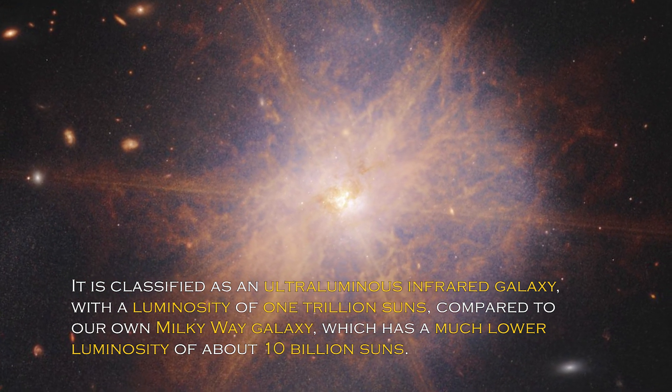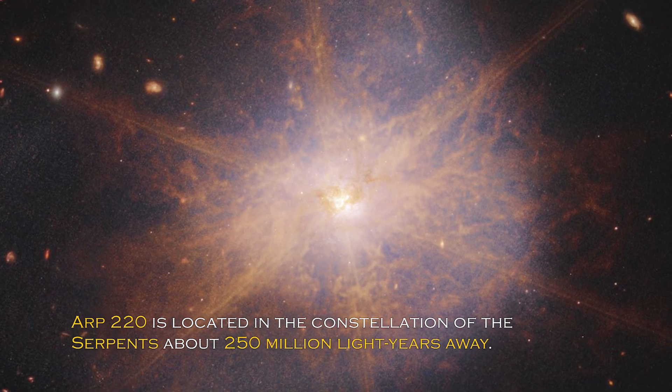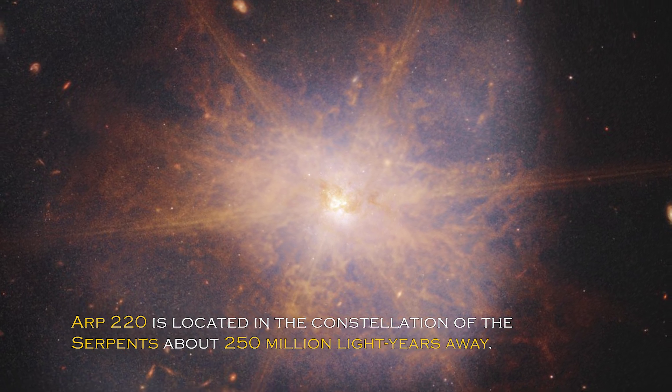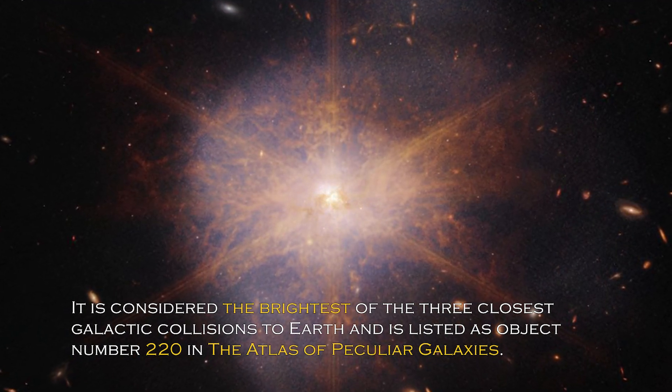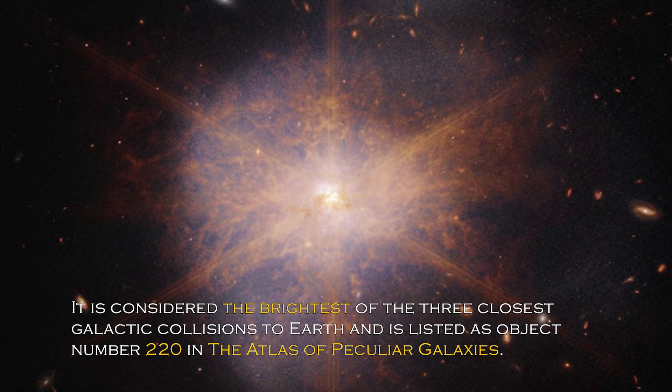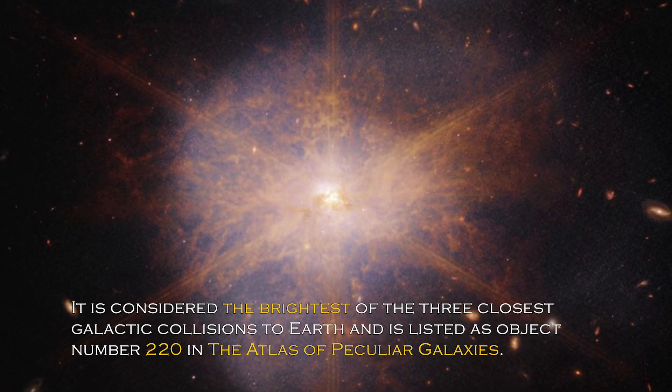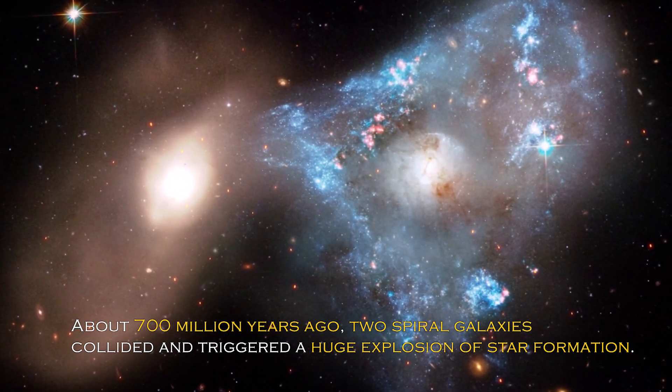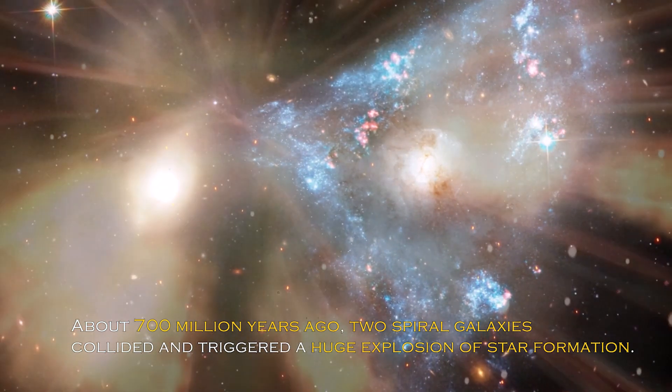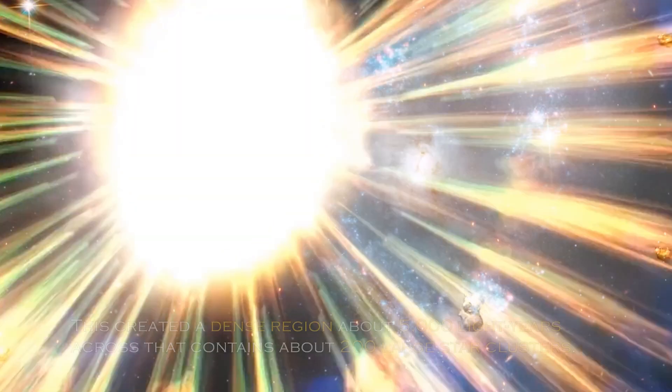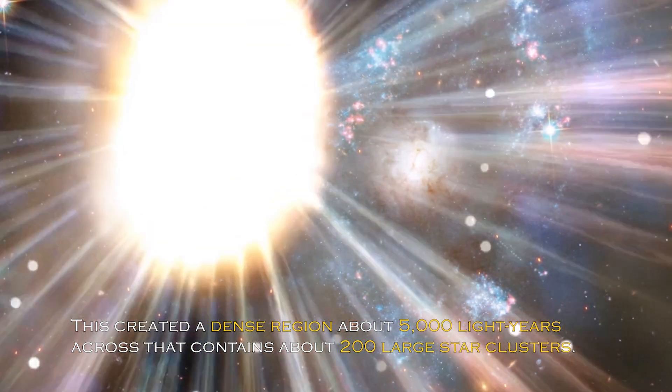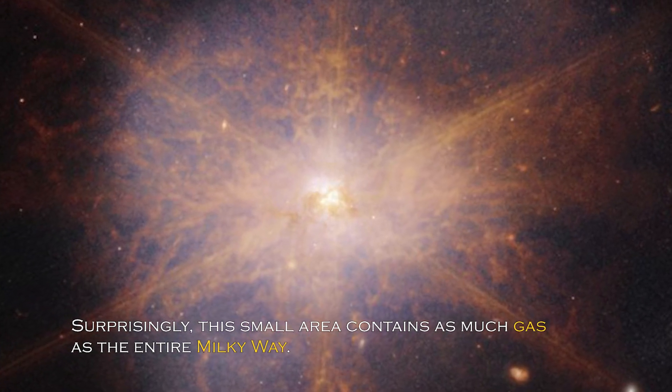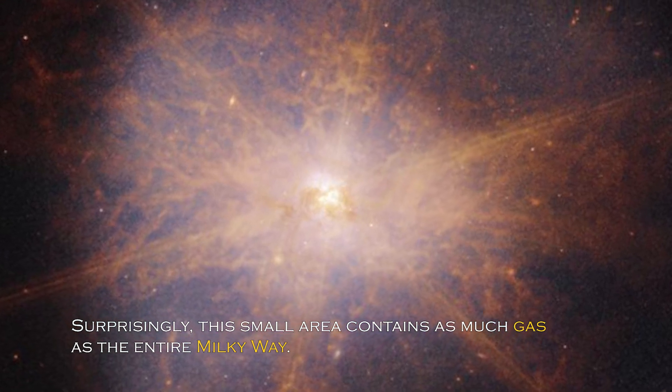ARP 220 is located in the constellation of the Serpents, about 250 million light-years away. It is considered the brightest of the three closest galactic collisions to Earth, and it is listed as object number 220 in the Atlas of Peculiar Galaxies. About 700 million years ago, two spiral galaxies collided and triggered a huge explosion of star formation. This created a dense region about 5,000 light-years across that contains about 200 large star clusters. Surprisingly, this small area contains as much gas as the entire Milky Way.